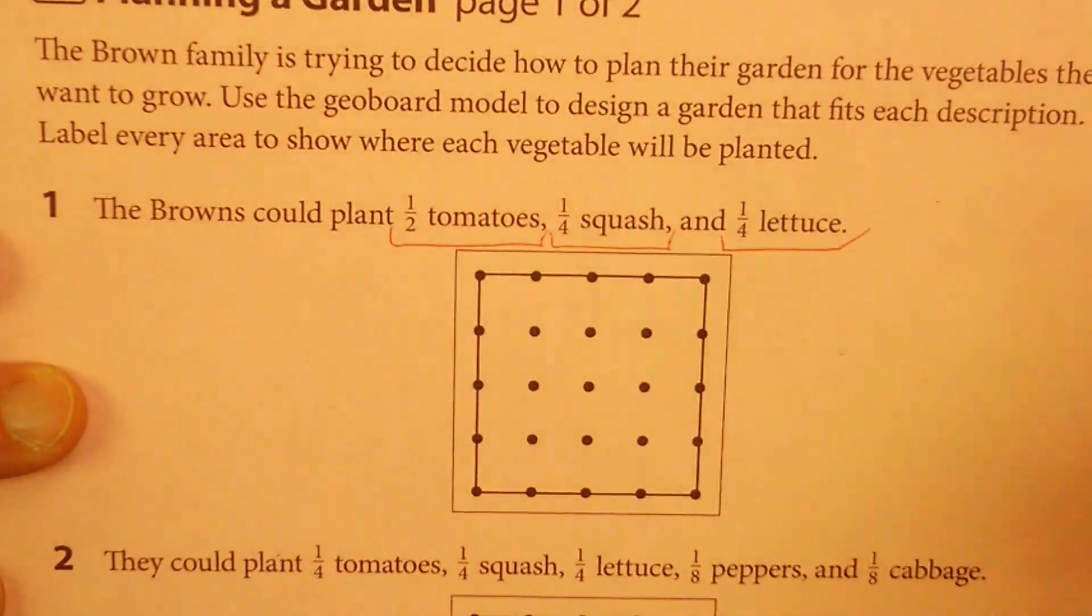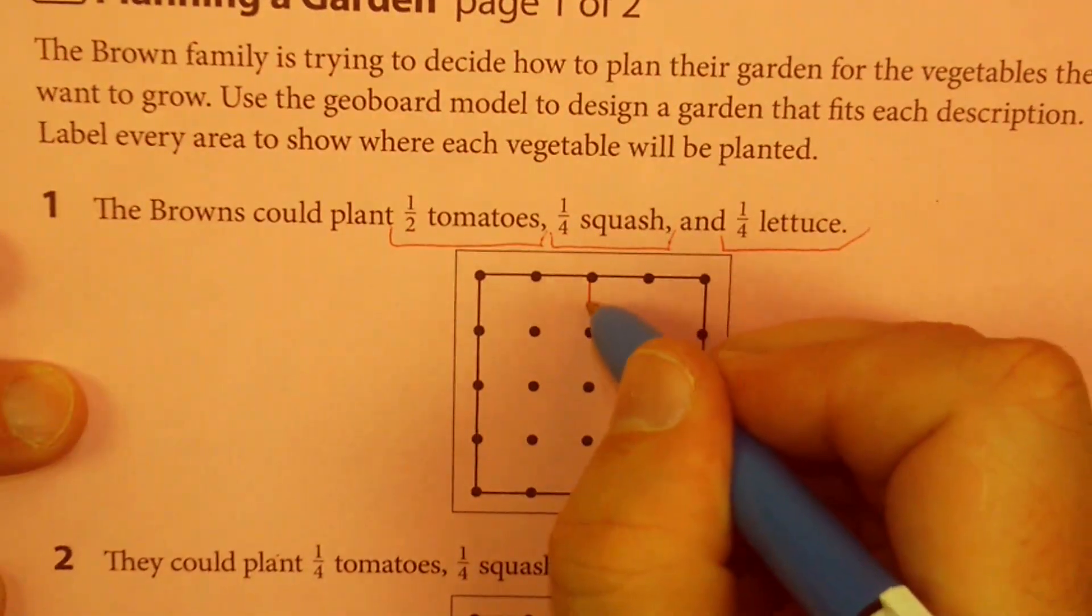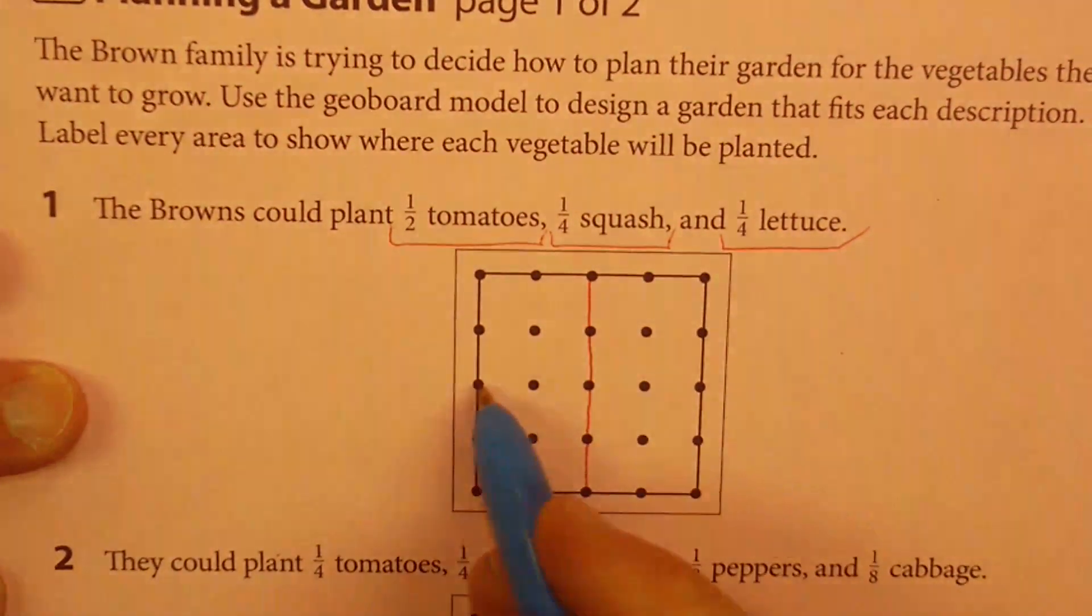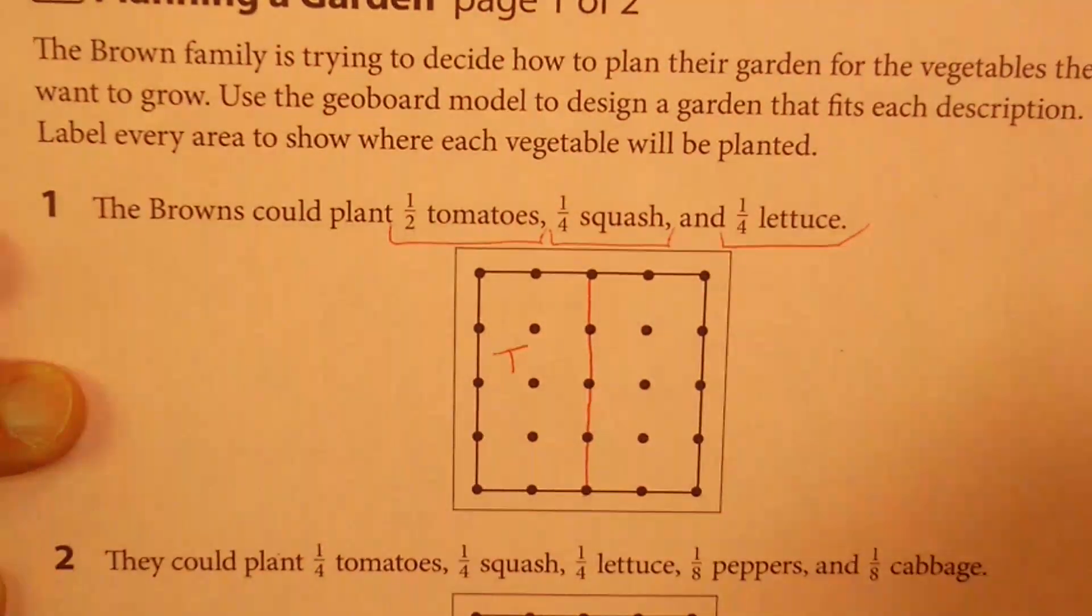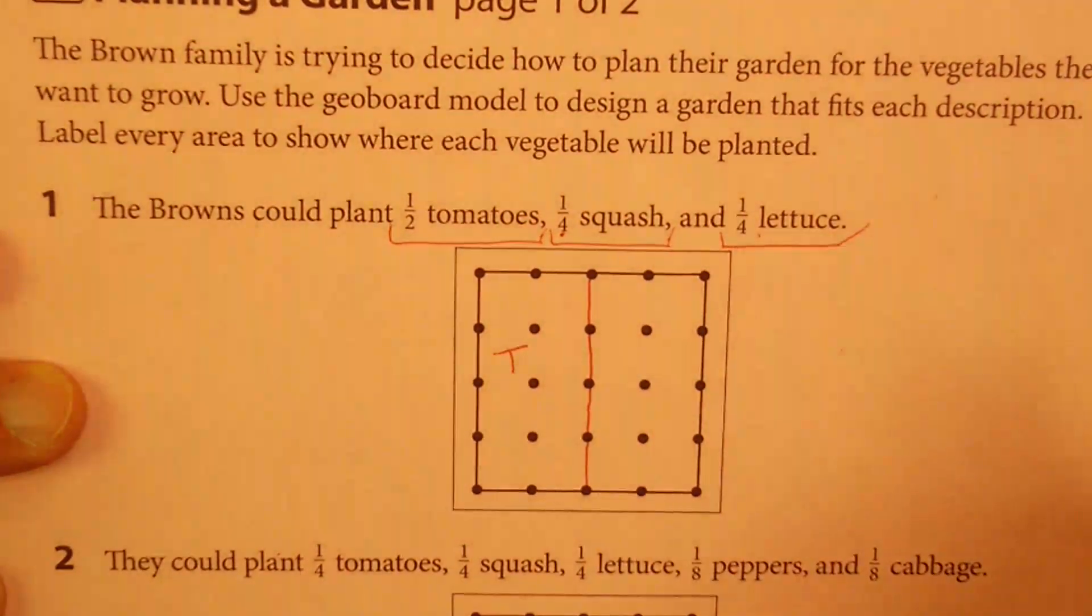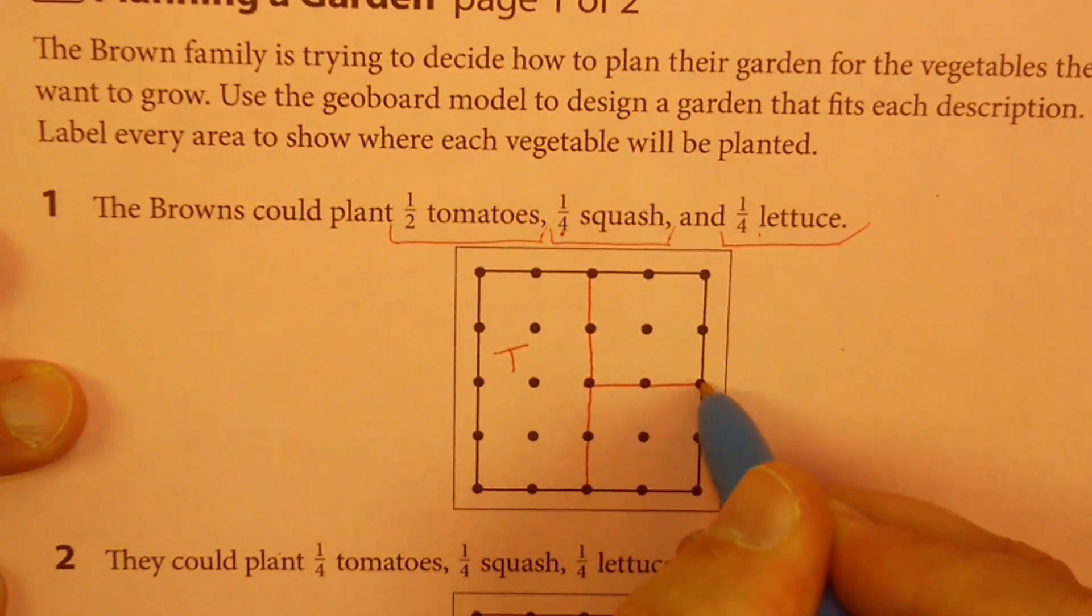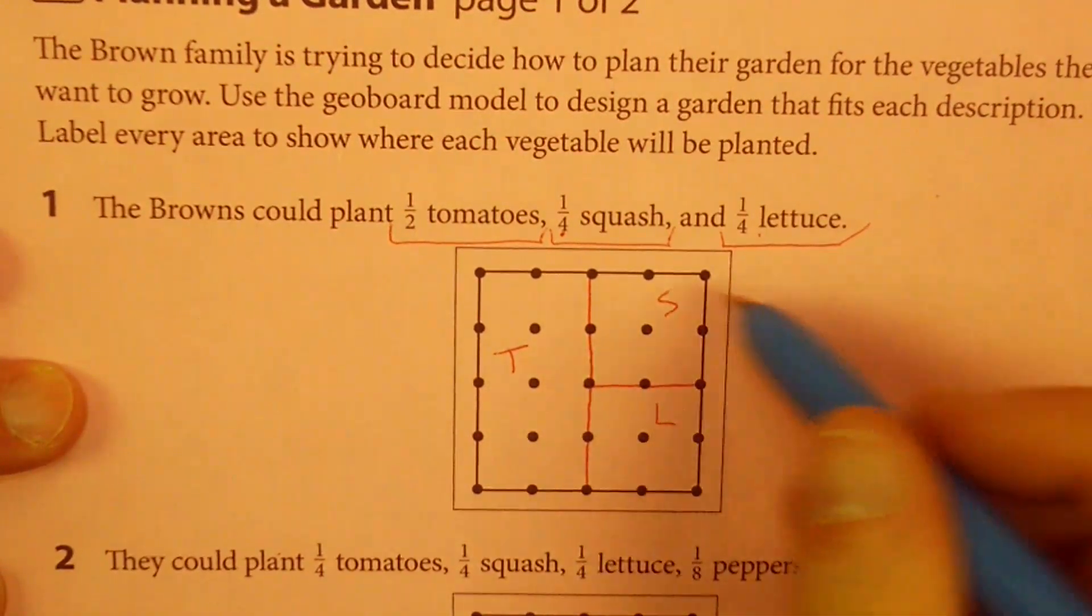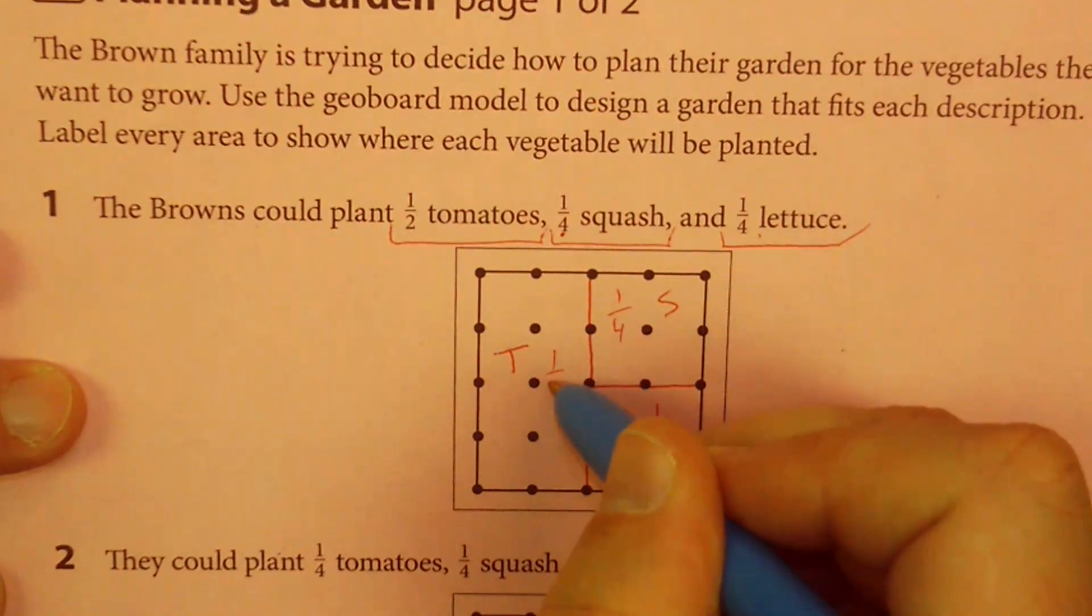Well, I think the easiest thing to do would probably be to divide it in half. Hopefully we can determine that putting a line down the middle, either up and down or left and right, will count. So we could say this would be T for tomatoes. That's one-half. Now I have this other half where I need to do one-quarter squash, one-quarter lettuce. I guess I could draw a line here. And now I have maybe squash here and lettuce here. This is one-fourth. This is one-fourth. This is one-half.